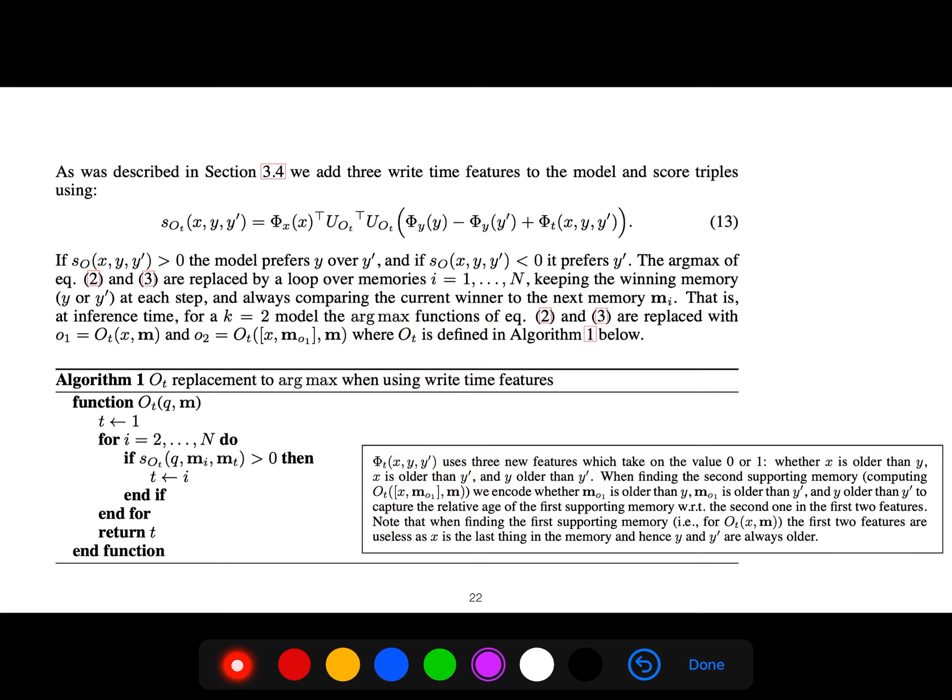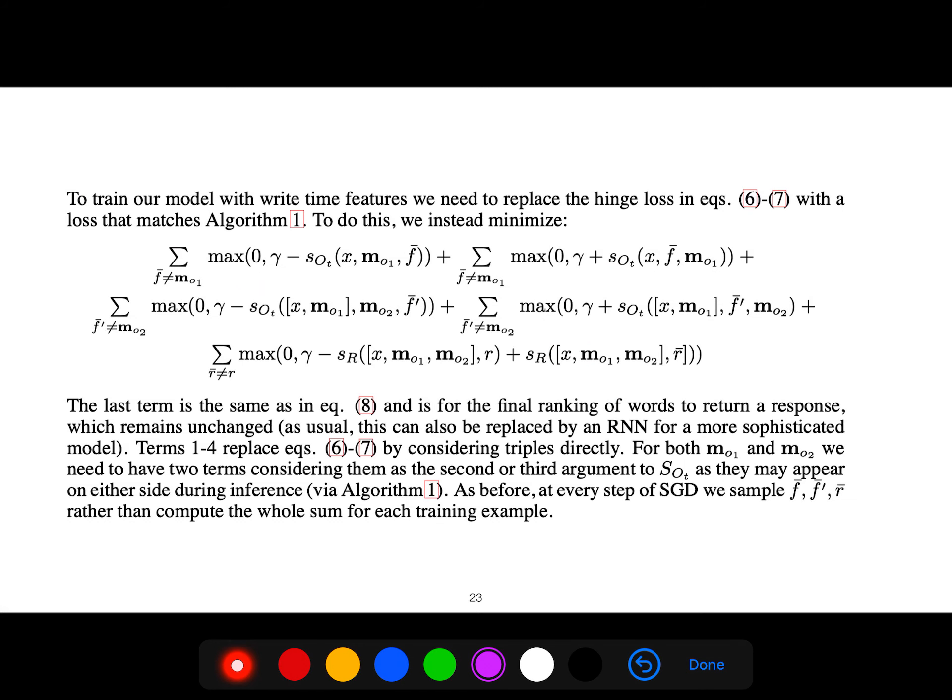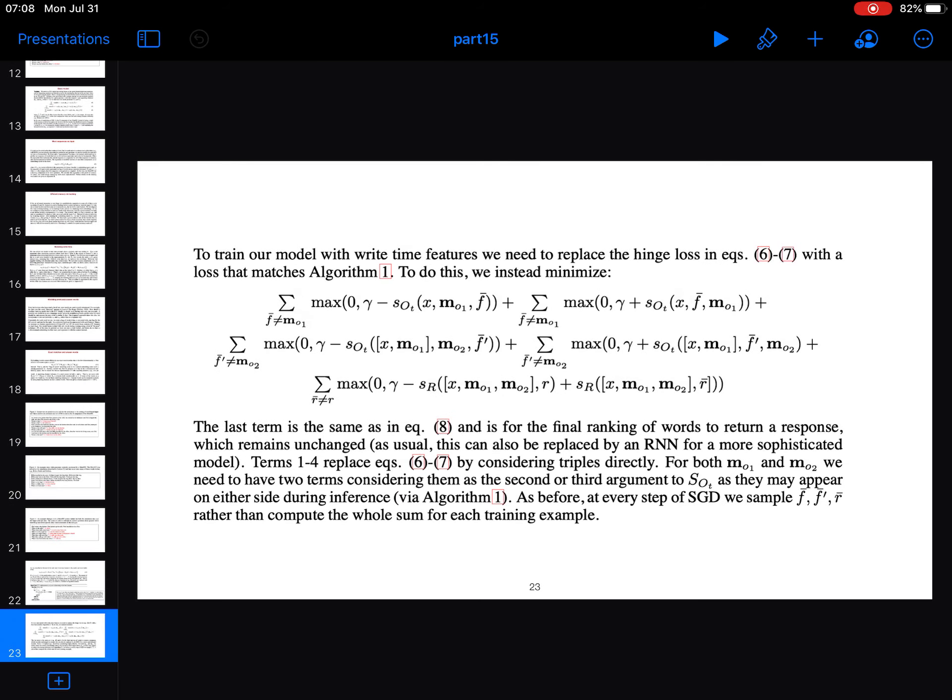We add three time features to model and score this triple. As I said, there is a priority. We want to know if y has priority over y prime. The model prefers y over y prime if this is greater than zero. I think I've given the motivation for you to study this interesting paper.